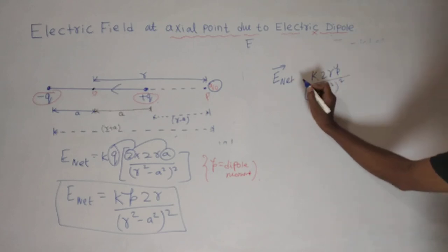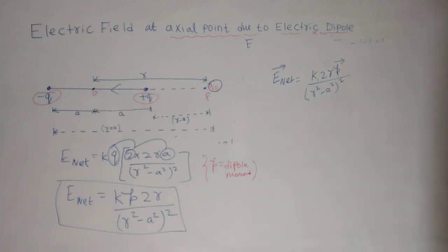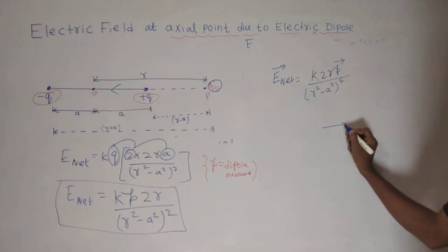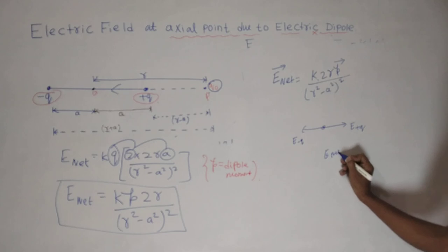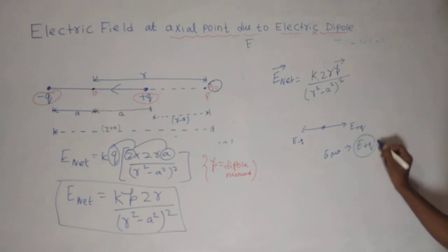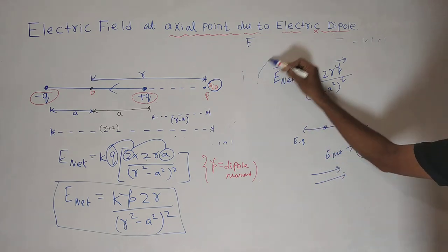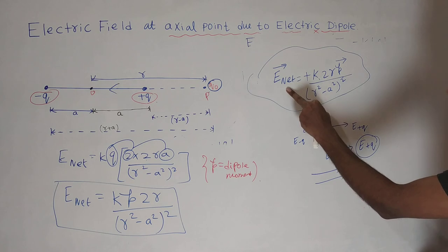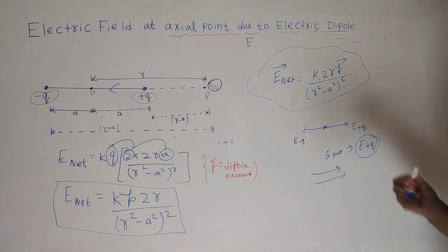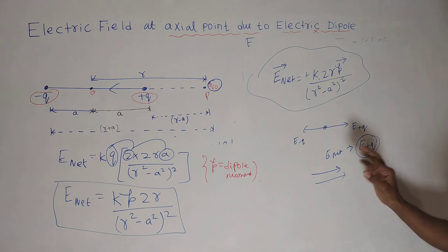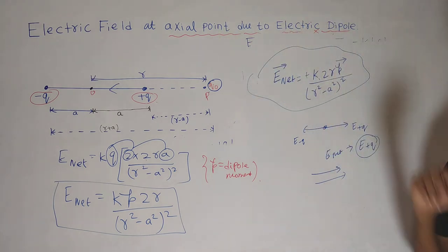In vector form, rho is a vector quantity, so we write the vector sign over rho. The direction of net electric field at the axial point is along the direction of E due to plus Q charge, which is in the same direction as the dipole moment — from negative to positive. Since both are in the same direction, there is no negative sign. So E-net vector at axial point is K times 2R times rho-vector divided by (R² minus A²)². This completes the electric field at the axial point due to an electric dipole.